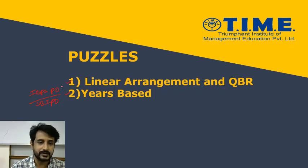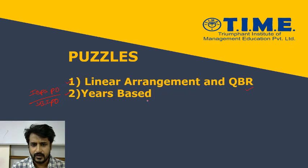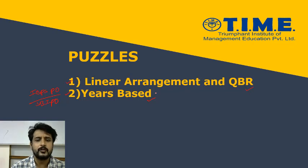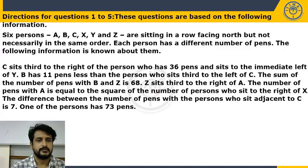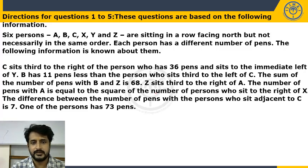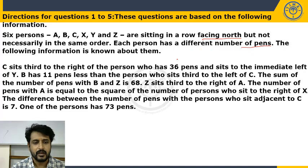We have taken moderate level of difficulty questions here. Without wasting much time, let's discuss the linear arrangement. In these questions we are not going to discuss the basics — we are going to discuss what kind of approach has to be followed and what kind of analysis is required to solve the puzzle. We have given five questions below. The information given: six persons A, B, C, X, Y and G are sitting in a row facing north, not necessarily in the same order. Each person has a different number of pens.